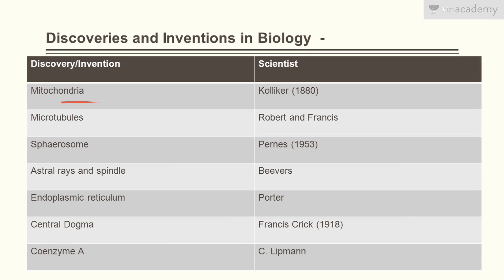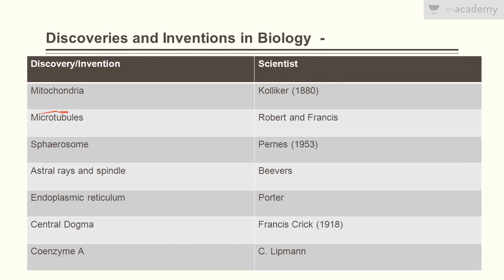Mitochondria was discovered by Kolliker in the 1880s, and it was named mitochondria by Benda. So Kolliker discovered the mitochondria but the name mitochondria was given by Benda. Microtubules were discovered by Robert and Francis.